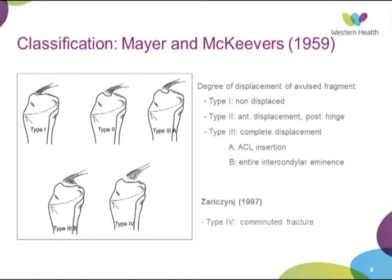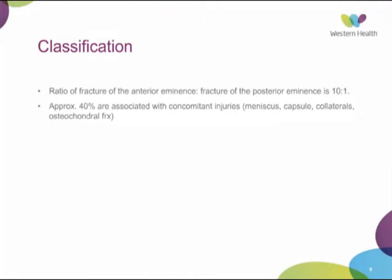Zaricznyj in 1977 further added a type 4 classification, where the fragment is comminuted. The ratio of anterior to posterior eminence fracture is about 10 to 1, so it's very uncommon to see a fracture of the posterior eminence. About 40% are associated with concomitant injuries — soft tissue injuries including meniscus, capsular, collaterals, and osteochondral fractures.